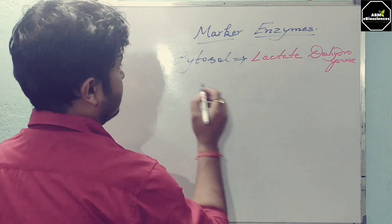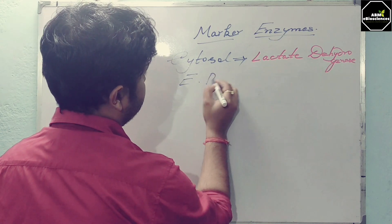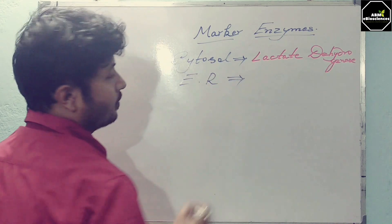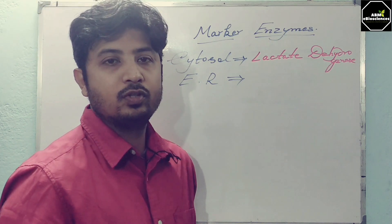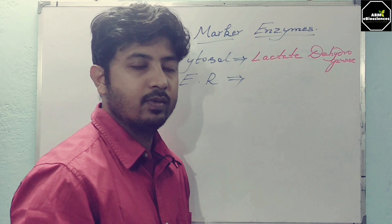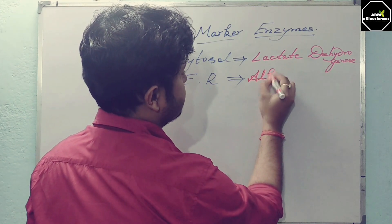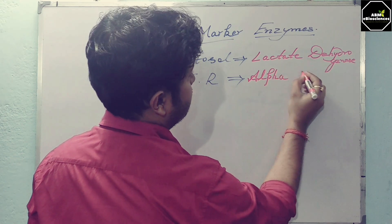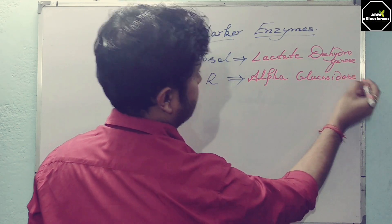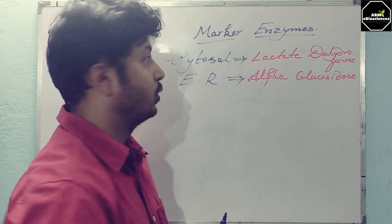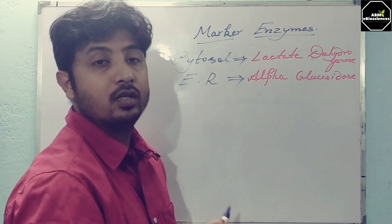Next is the endoplasmic reticulum — ER, whether smooth or rough. The marker enzyme for the ER is alpha-glucosidase. When you are working with the endoplasmic reticulum, you need to recognize this enzyme to confirm the organelle.